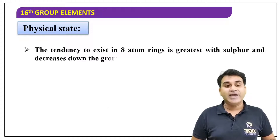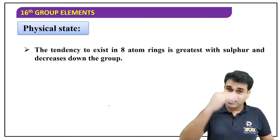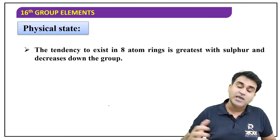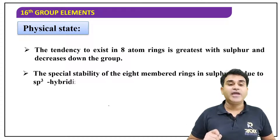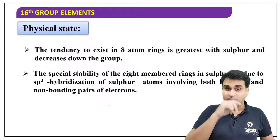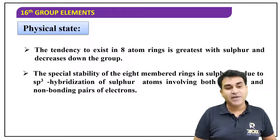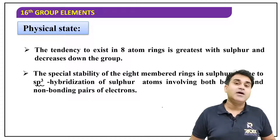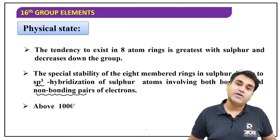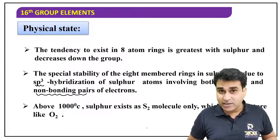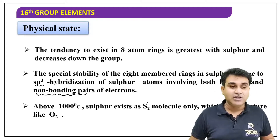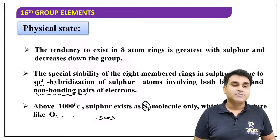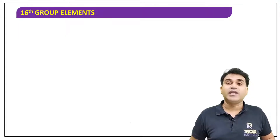S₆ can exist in chair form but that is less stable. The more stable form is the S₈ molecule. The tendency to exist as S₈ rings is greatest with sulfur and decreases down the group — from oxygen to sulfur to selenium, the capacity to exist in S₈ rings decreases because catenation property decreases. The special ability of the 8-member ring in sulfur is due to sp³ hybridization of sulfur, giving a bond angle close to 109°, but actual is 105° due to presence of non-bonding pair of electrons. Above 1000°C, S₂ molecules can exist with a structure similar to oxygen, but only at very high temperature.